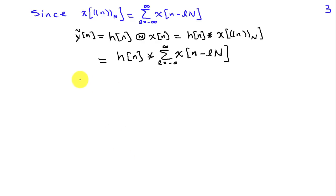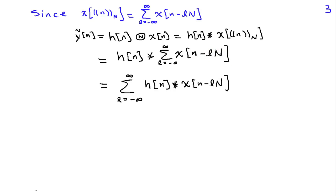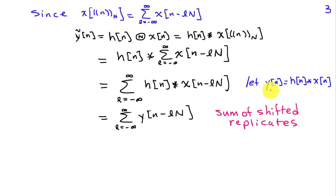This N-periodic extension of x can be written as a sum of shifted replicates, where the shift is capital N and the original signal is x of n. I can expand this circular convolution and write it as h of n ordinary-convolved with the sum from l equals minus infinity to infinity of x of n minus l times N. Moving the sum outside the convolution, I have a sum of h of n convolved with shifted versions of x of n. Since convolution commutes with the shift operation, I let y of n be the ordinary convolution of h and x.